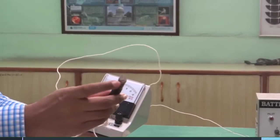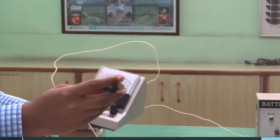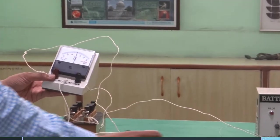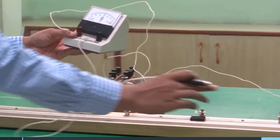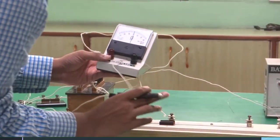This is a jockey. It has got a metallic edge. When it touches on this wire, you can see this wire is known as meter bridge because the length of the scale is 100 cm which is equal to 1 m.